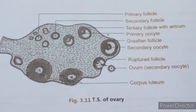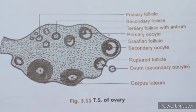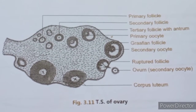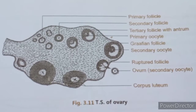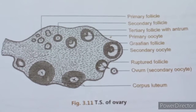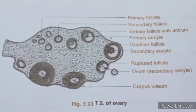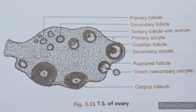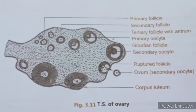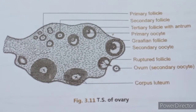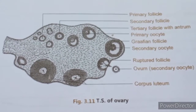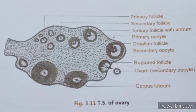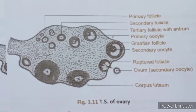This is the structure of the TS of a single ovary in females. As mentioned in the previous video on the male reproductive system, sperm formation takes place after puberty in males, whereas in females, when the girl child is born, nearly thousands of eggs are already present in each ovary.